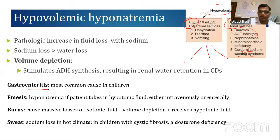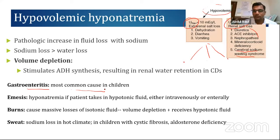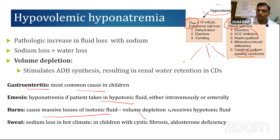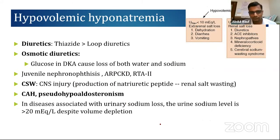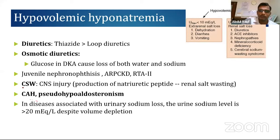Extra-renal causes of hypovolemic hyponatremia include gastroenteritis — children drink hypotonic fluids, resulting in hyponatremia — and burns with massive isotonic fluid loss where patients receive hypotonic replacement. Cystic fibrosis is another cause. Renal causes include diuretics (thiazides, loop diuretics, osmotic diuretics), congenital adrenal hyperplasia, and cerebral salt wasting. In severe cerebral injury, natriuretic peptides are released, resulting in sodium loss through the urine.